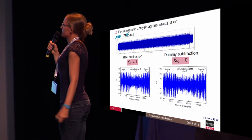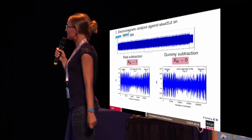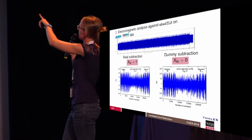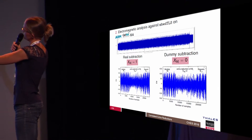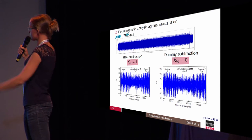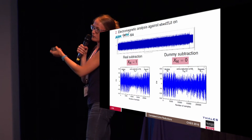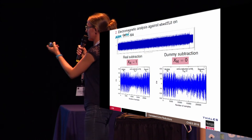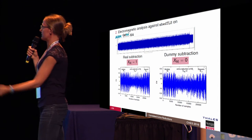The second experimental part is electromagnetic analysis on EmbedTLS implementing on Cortex-M4. We take one acquisition on a full RSA modular exponentiation. For the extra reduction analysis, we cut all the operations — square and multiply — and look at parts of the traces to find if it's a real or dummy extra reduction. Just using your eyes, you cannot find the difference, but using horizontal side-channel analysis like clustering, you can find a difference between x equals 1 and x equals 0.